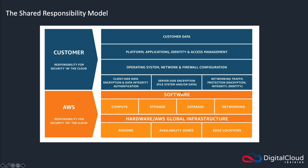In the middle there is a delineation. We have compute, storage, database, and networking — the physical servers and the software layer that runs on them. The compute servers in the AWS data center run an operating system, but that's not your responsibility — AWS have to manage that. Similarly, the storage systems run software and have physical disks. The networking configurations are all taken care of by AWS.